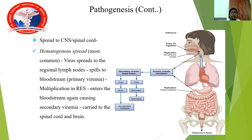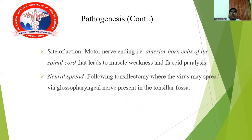The site of action is the motor neurons — specifically the anterior horn cells of the spinal cord — leading to muscle weakness and transient paralysis. Neural spread can also occur following tonsillectomy, where the virus spreads via the glossopharyngeal nerve present in the tonsillar fossa.